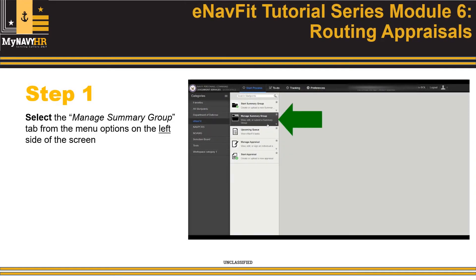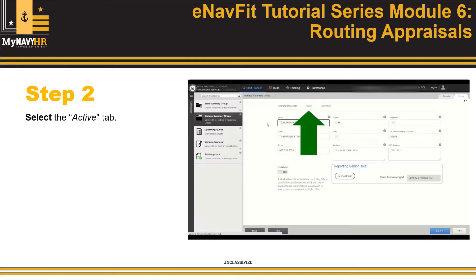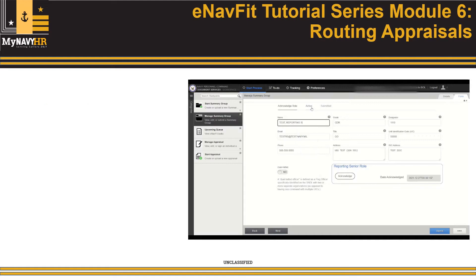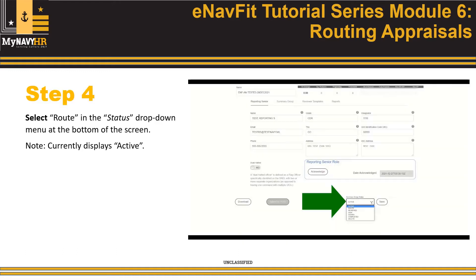Step 1 – Select the Manage Summary Group tab from the menu options on the left side of the screen. Step 2 – Select the Active tab. Step 3 – Select the Open button next to the Summary Group to be routed. Step 4 – Select Route in the Status drop-down menu at the bottom of the screen.